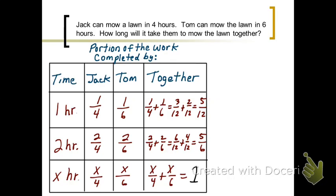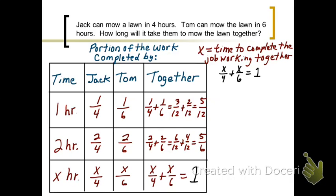And let's continue on. Now let's make sure we understand what x represents here. x is the time that it takes them to complete the job working together. And this is our equation that we're going to use to figure out what x is equal to. So first of all, you should find an LCD. And it is 12. So you'll multiply both sides of the equation by 12.